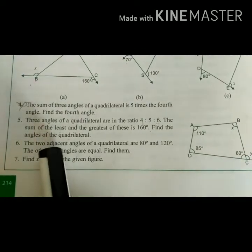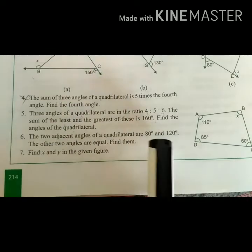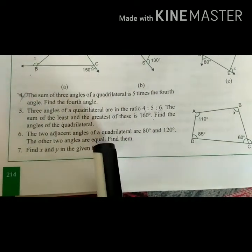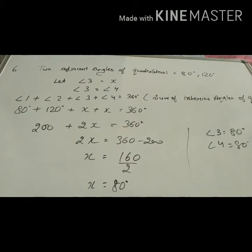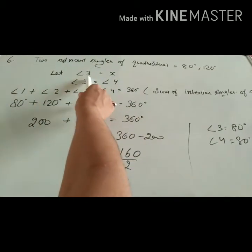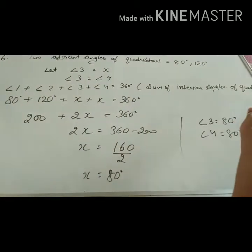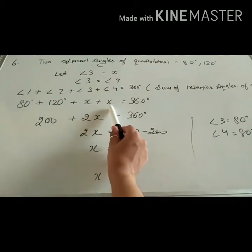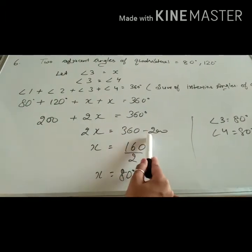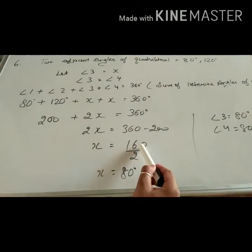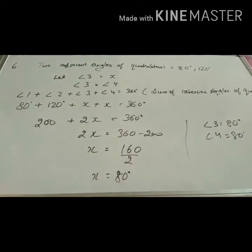Question number 6: Two adjacent angles of a quadrilateral are 80 degrees and 120 degrees; the other two angles are equal — find them. Let angle 3 = x, so angle 4 = x. Sum of all interior angles of a quadrilateral is 360 degrees: 80 + 120 + x + x = 360, giving 200 + 2x = 360, so 2x = 160, and x = 80 degrees. Angle 3 = angle 4 = 80 degrees.